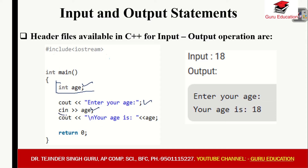Here is an example of taking input through the keyboard using the cin object with the extraction operator, and using cout with the insertion operator to print the value on screen.